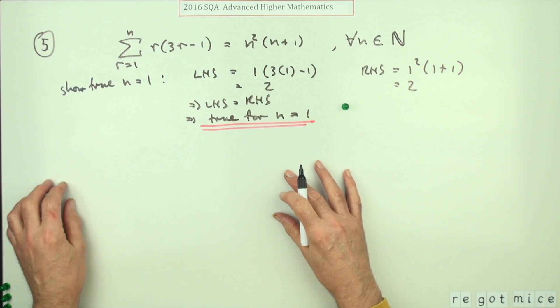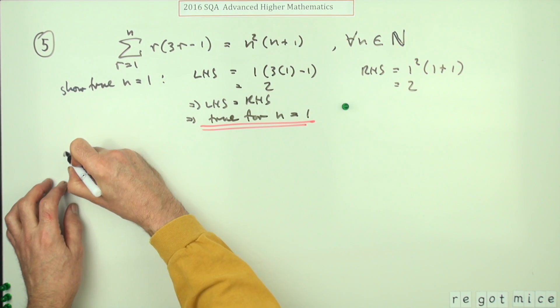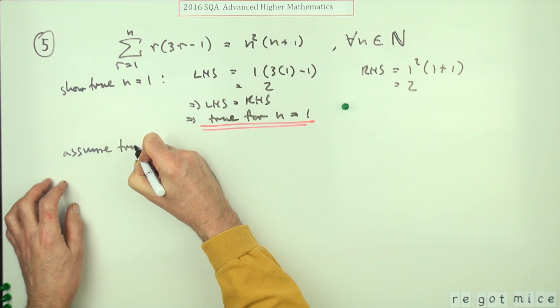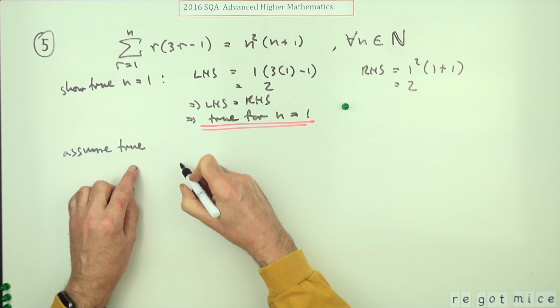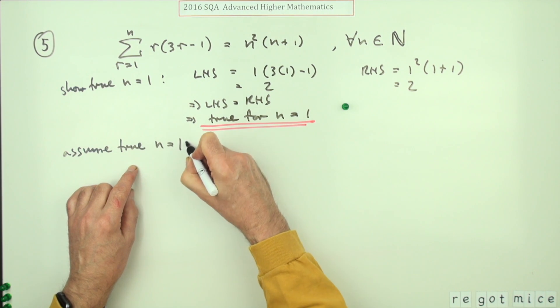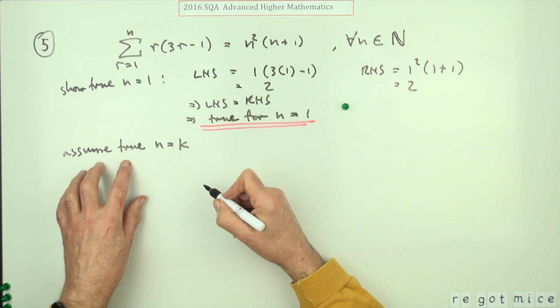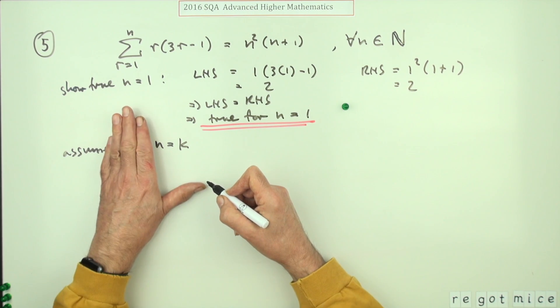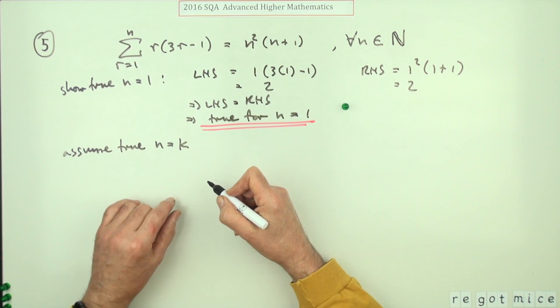Now the inductive hypothesis: assume true at some point n equals k. But what you can't say is true for n equals k, or consider n equals k, or even worse just assume n is equal to k, which is just a change of name.